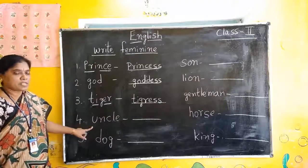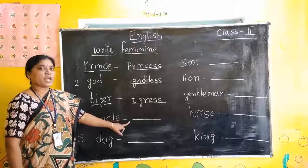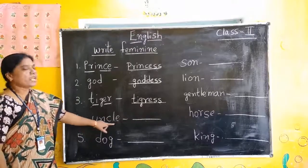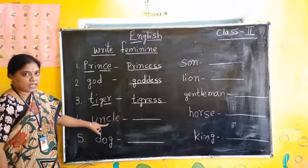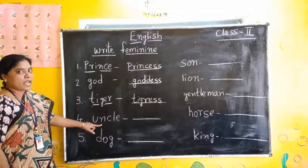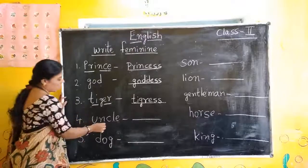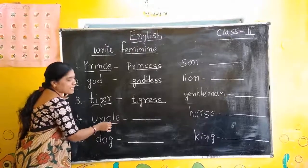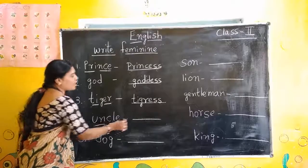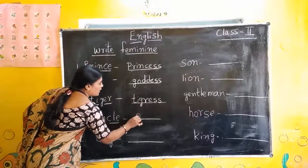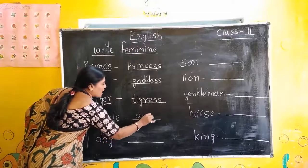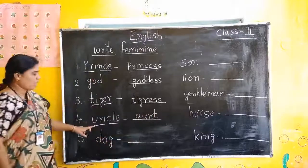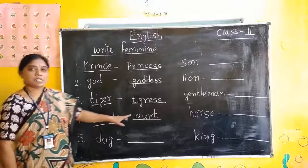Uncle — the word will totally change. Aunt. U-N-C-L-E, Uncle. A-U-N-T, Aunt. Uncle — Aunt.